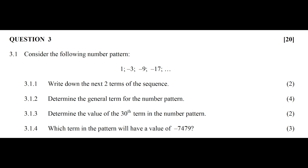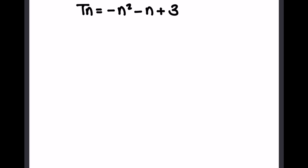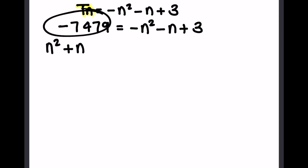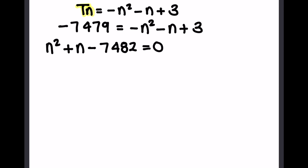The next question asks which term will have a value of negative 7,479. We write out our formula tn equals negative n squared minus n plus 3, and replace tn with negative 7,479. To solve, I take everything to one side, making the n squared positive: n squared plus n minus 7,479 minus 3 equals 0, giving n squared plus n minus 7,482 equals 0.